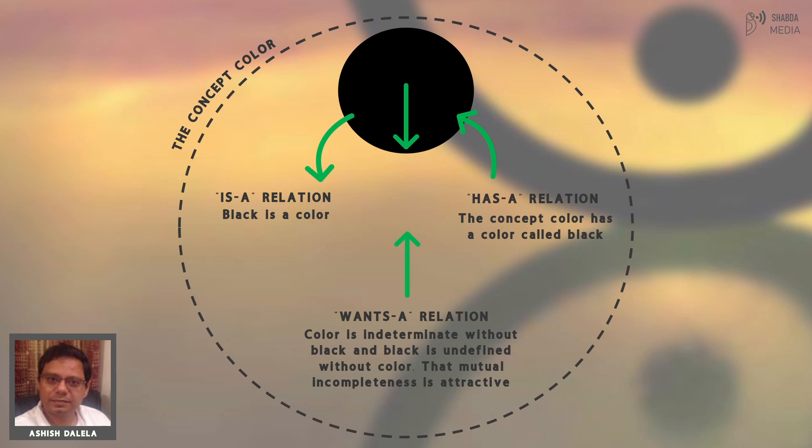Sri Chaitanya articulated this idea of Achintya-Bhedha-Bhedha-Tattva in which the whole and the part are separate and inseparable. And because this is a contradictory idea, you cannot articulate it in classical logic. However, the issue is that if we cannot understand it, then every other thing is unknowable, since every problem involves concepts which are immanent and transcendent. So, by saying that this is Achintya, which means inconceivable, all knowledge becomes impossible. Therefore, we must transcend classical logic and then the Achintya can become Chintya.